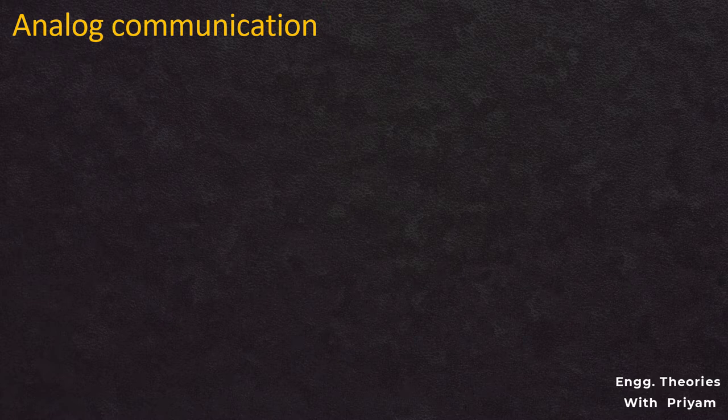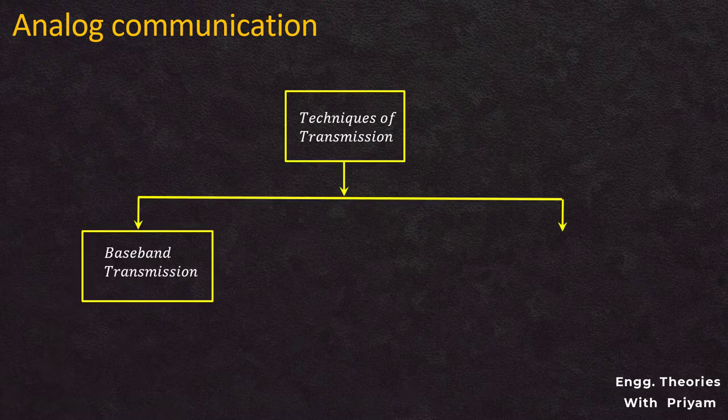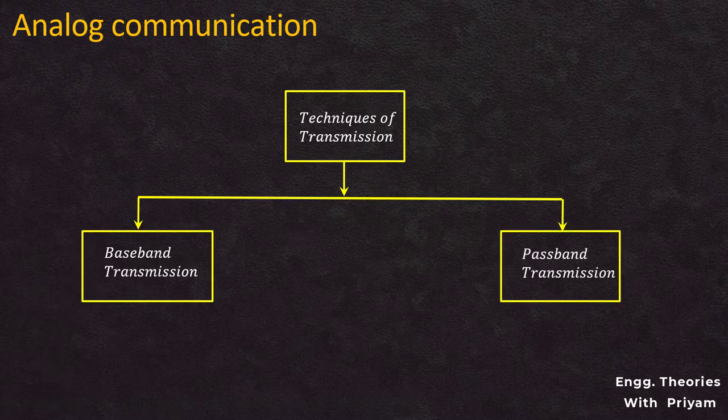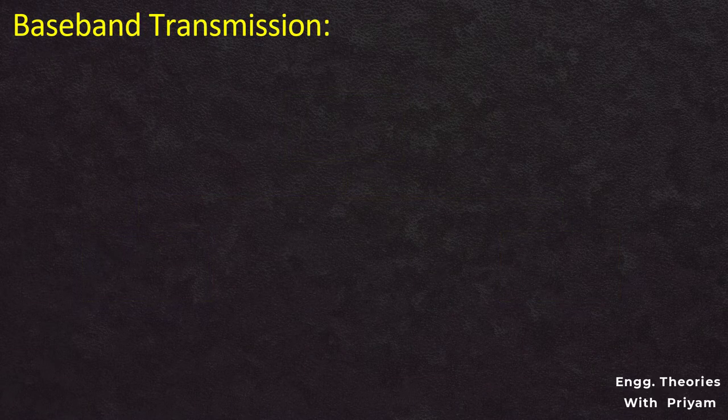In this lecture we will understand what is passband and baseband transmission system and also see the difference between the two transmission systems. As mentioned in the previous lecture, according to the techniques of transmission, the communication system can be divided into two types: baseband transmission and passband transmission.